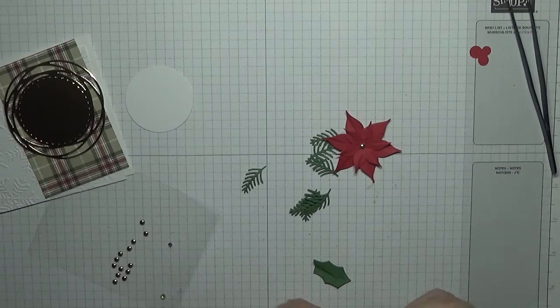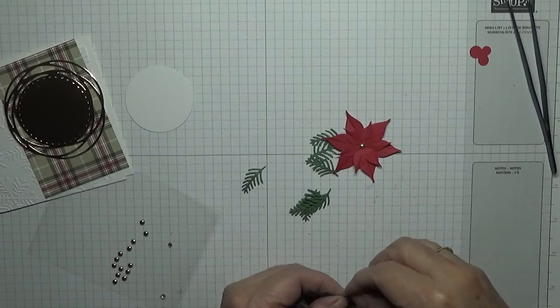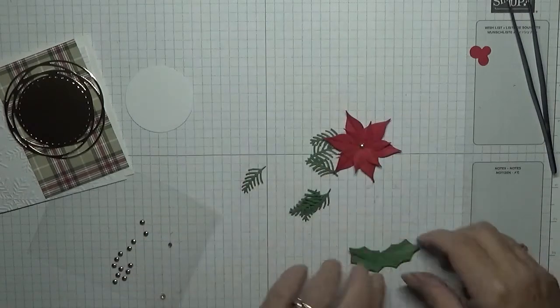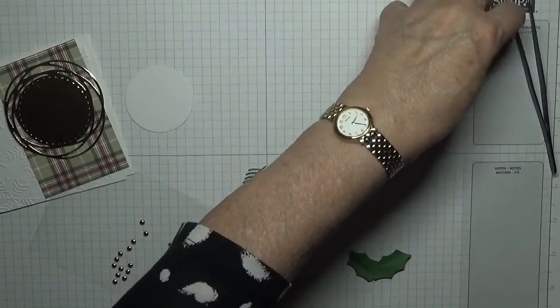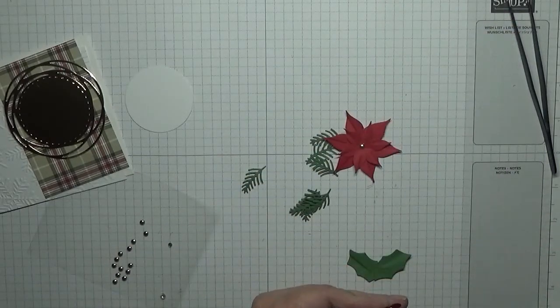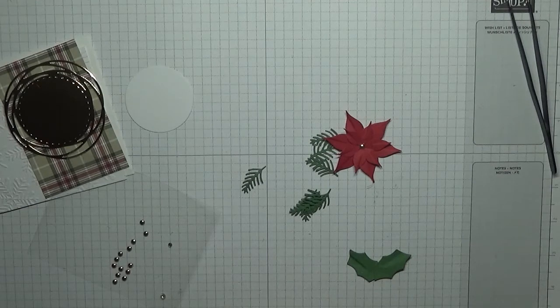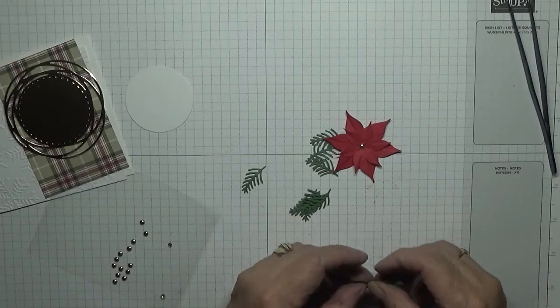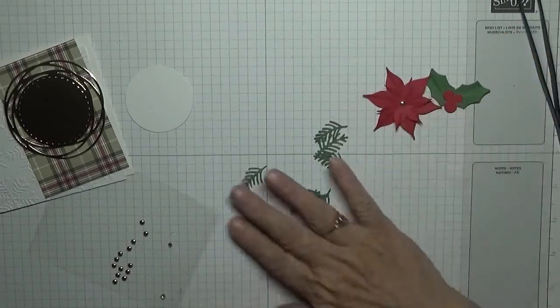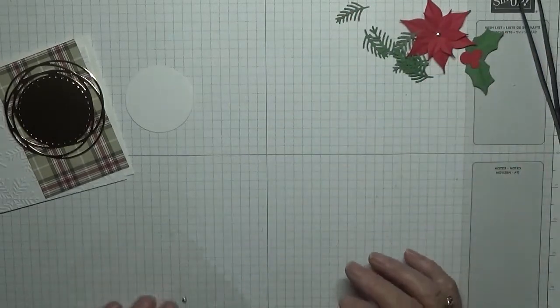Right, with the holly I am just joining the two leaves together like that, and then sticking the berries in the middle like that. That just gives everything ready to stick down.